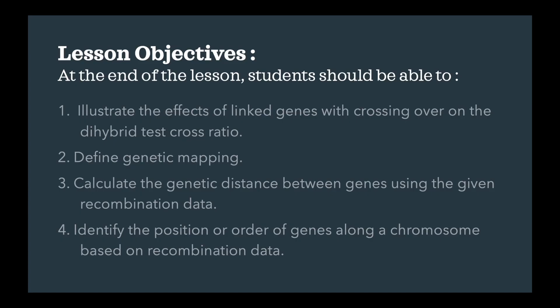These are the learning objectives you need to complete by the end of the lesson. Students should be able to illustrate the effects of linked genes with crossing over on the dihybrid test cross ratio, define genetic mapping, calculate the genetic distance between genes using recombination data, and identify the position or order of genes along a chromosome based on recombination data.